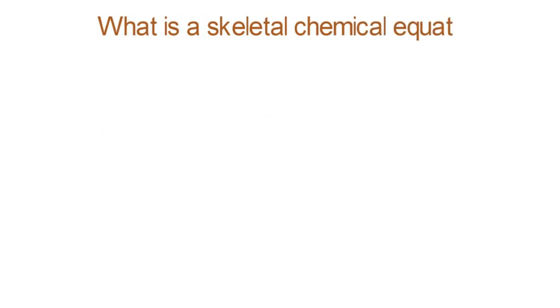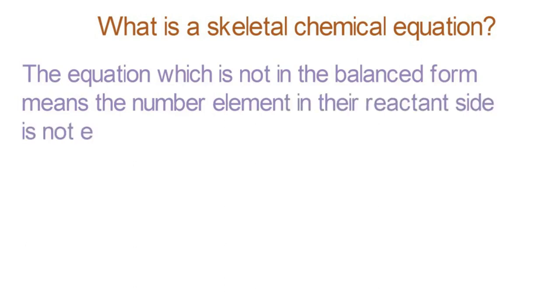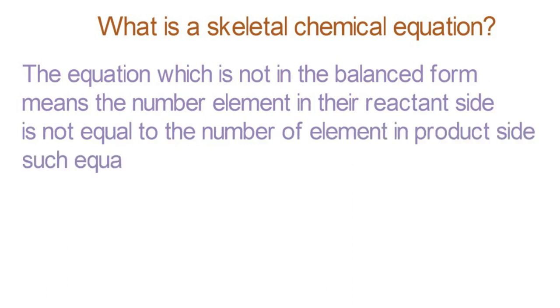What is a skeletal chemical equation? The equation which is not in the balanced form means the number of elements in the reactant side is not equal to the number of elements in product side. Such equation is called a skeletal chemical equation.